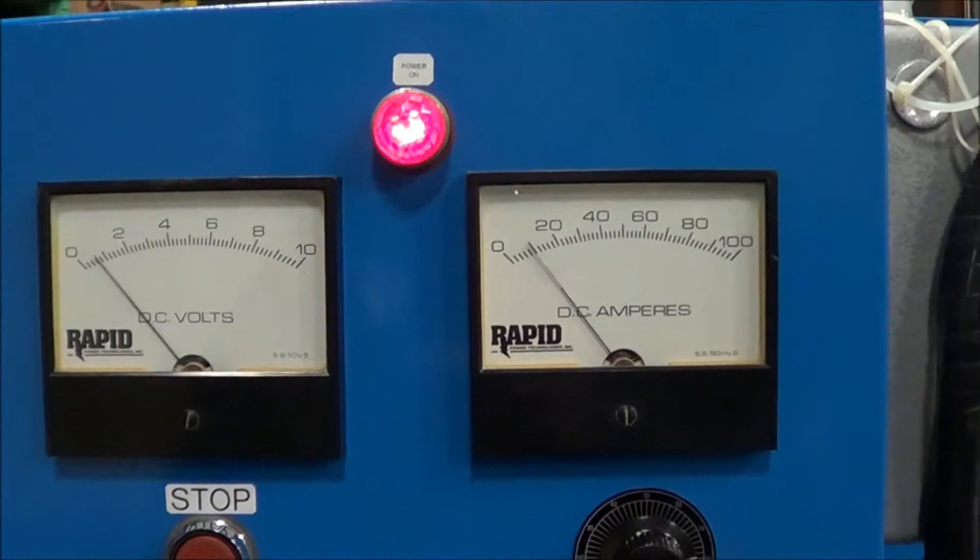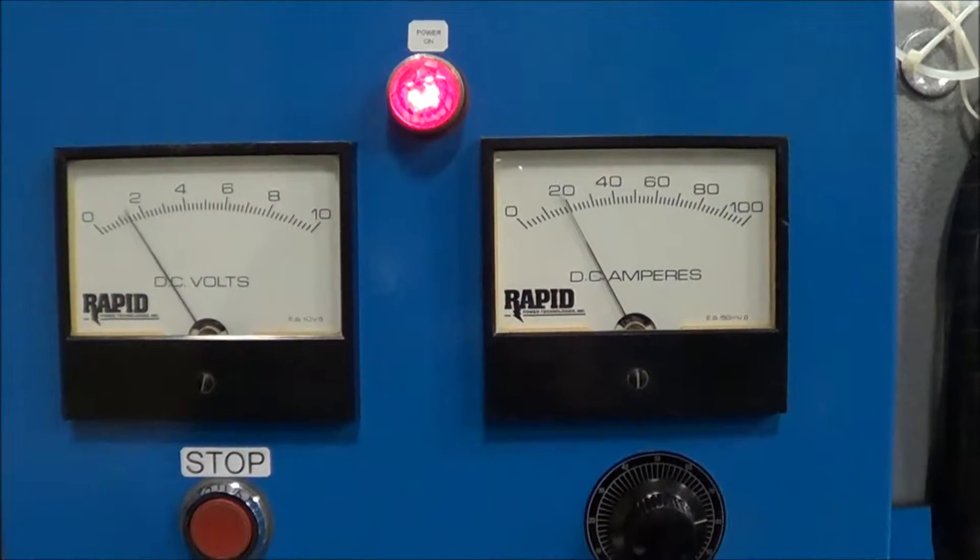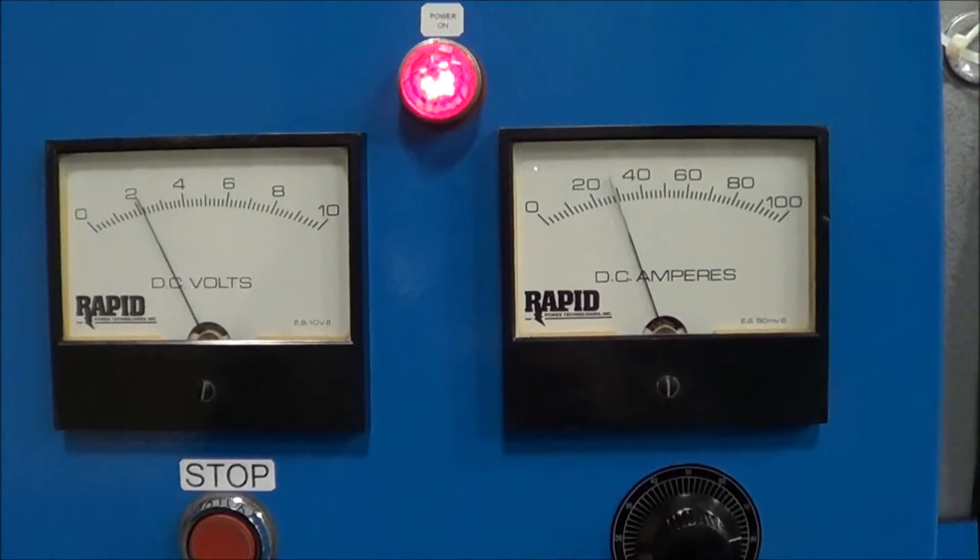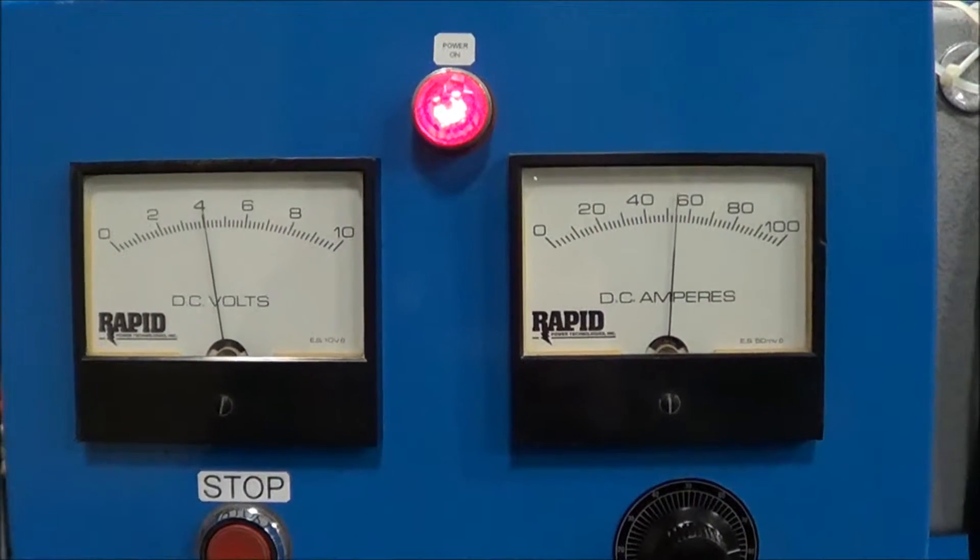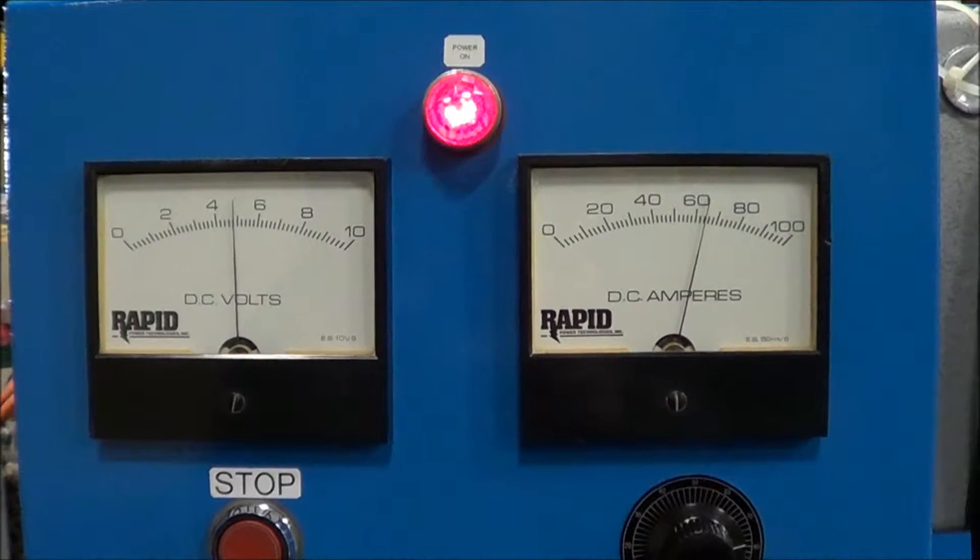See the motorized variac bring up the amps on the output. Once again, this is a 100 amp, 6 volt output, 480 input unit.